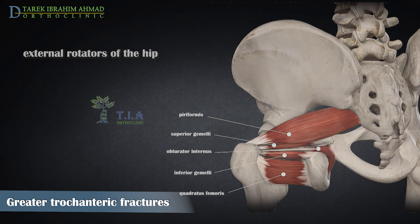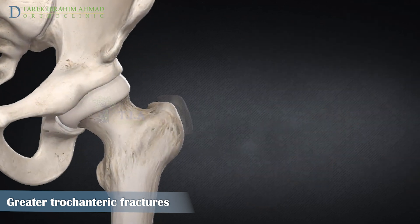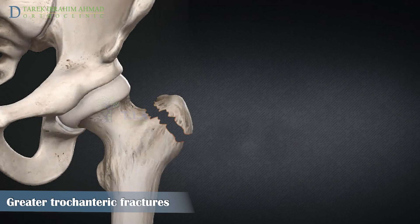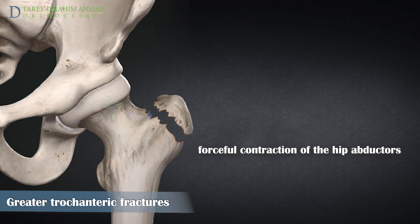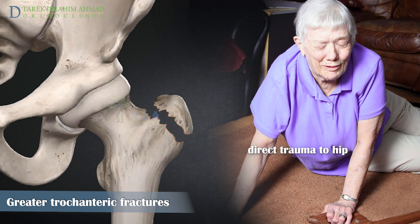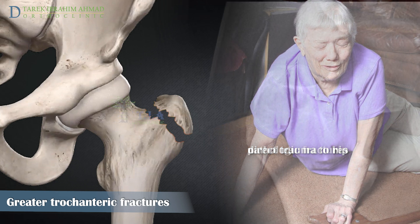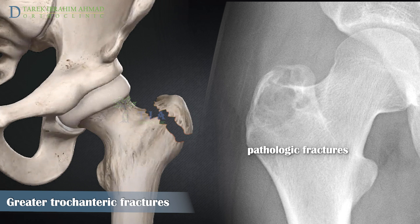Isolated fractures of the greater trochanter are uncommon, particularly in young patients. They are typically avulsion fractures caused by a forceful contraction of the hip abductors. They can also occur from direct trauma, such as a fall onto the lateral hip. In older individuals, in the absence of trauma, it is prudent to evaluate for metastasis or bone lesion.